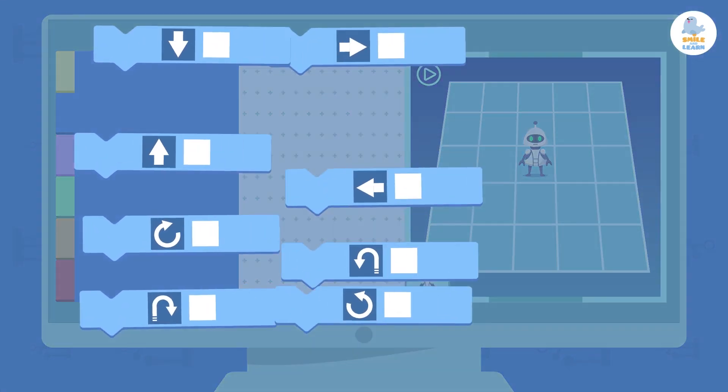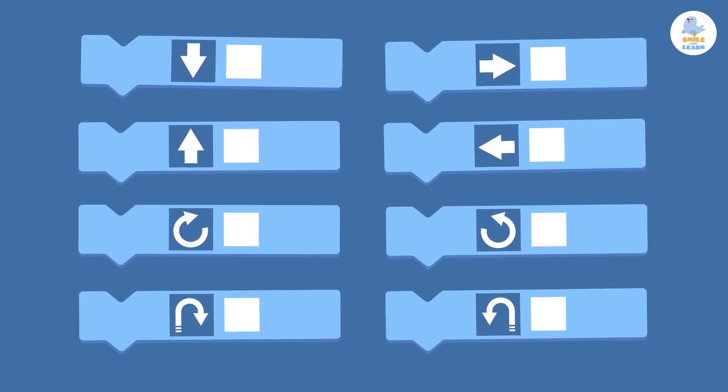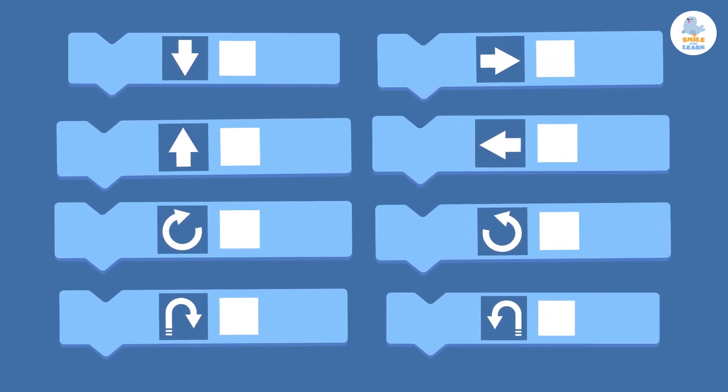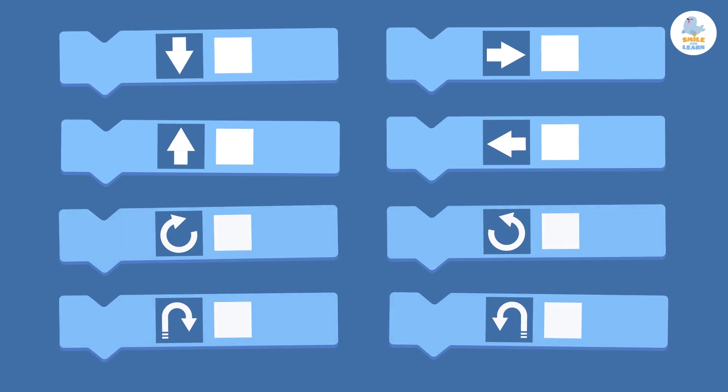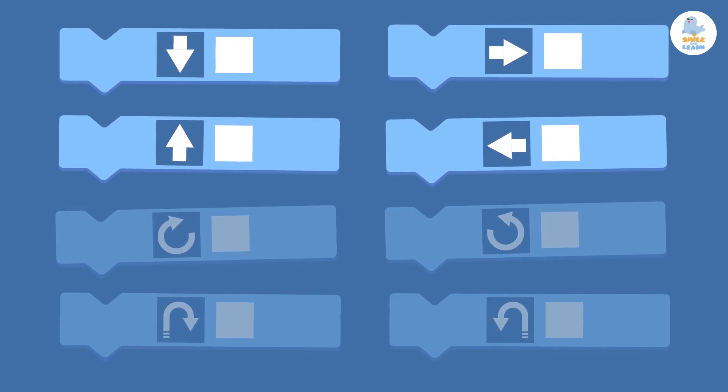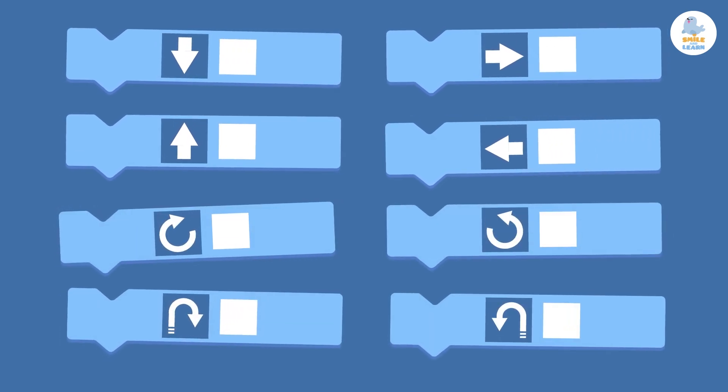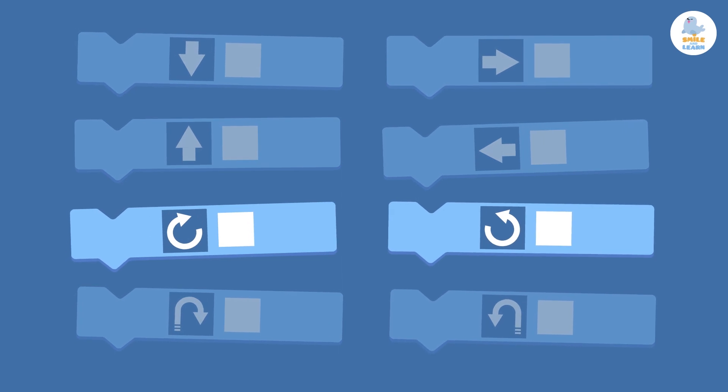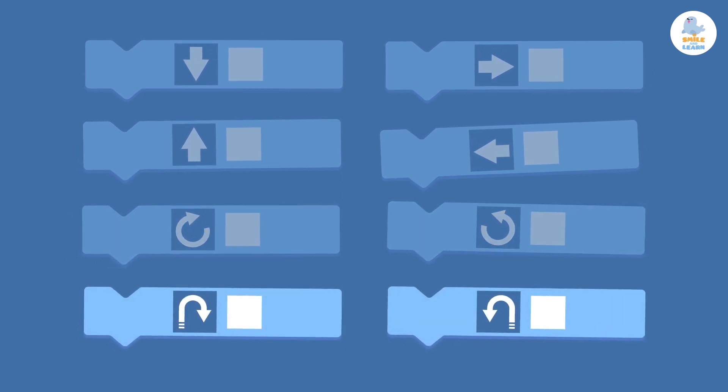For example, motion blocks are blue. These allow you to move a player or a robot from one place to another, as well as doing other movements such as turning, jumping, or tilting.